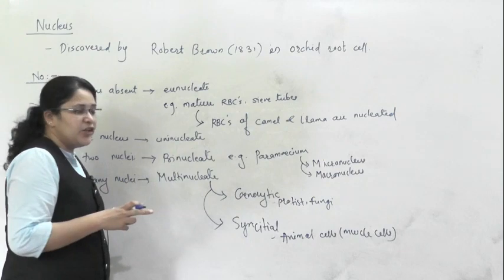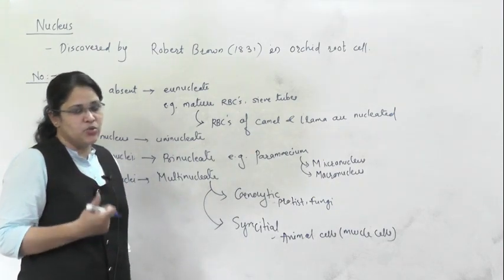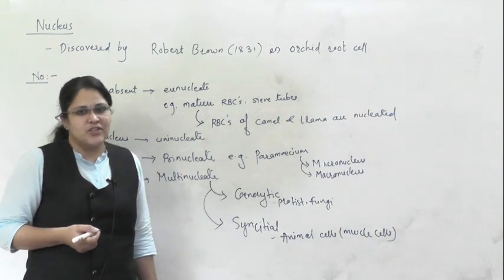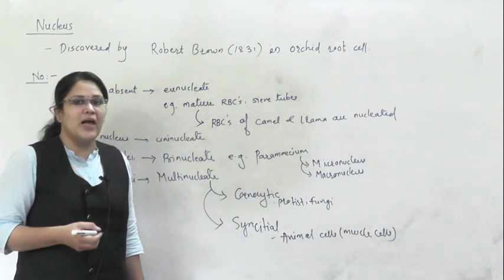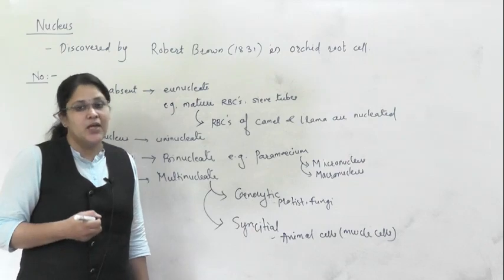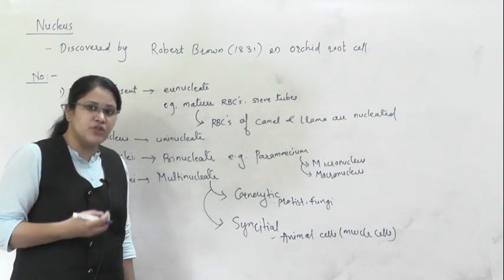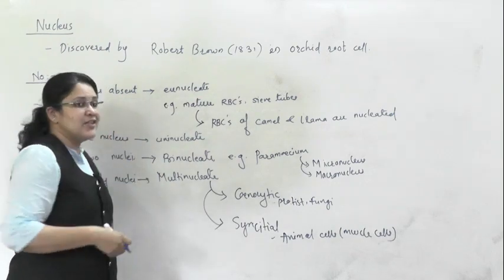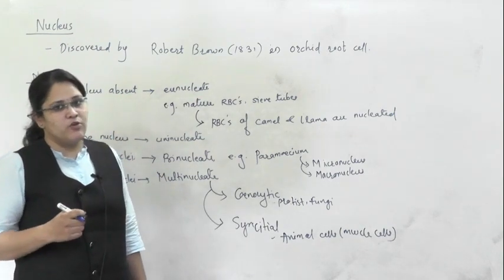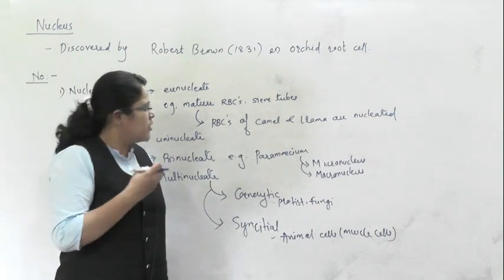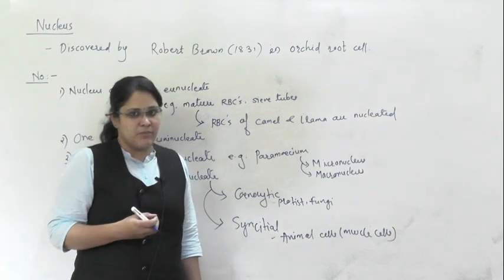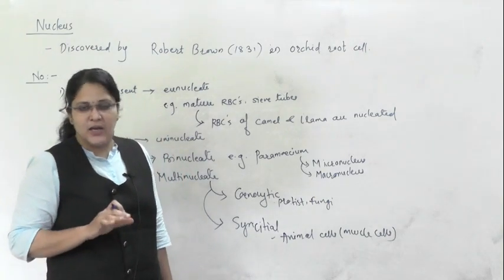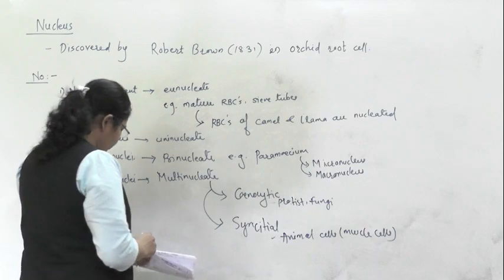To summarize: when there is one nucleus, that condition is uninucleate; two nuclei is binucleate; many nuclei is multinucleate; and when nucleus is absent in mature RBCs or mature sieve tubes, that is enucleate. RBCs of camel and llama are exceptions — they are nucleated.